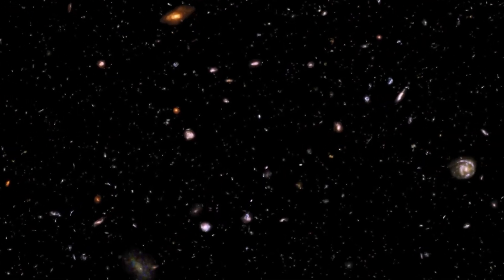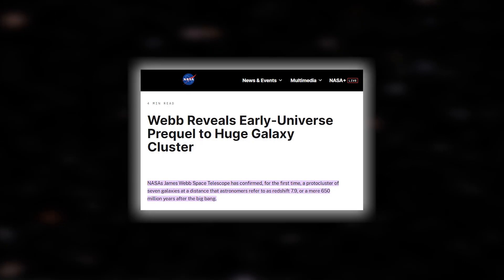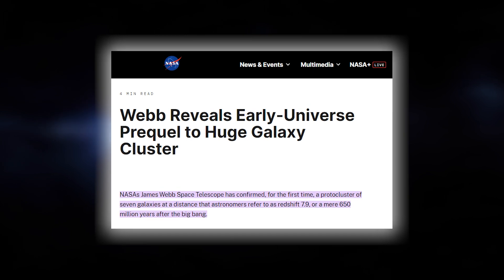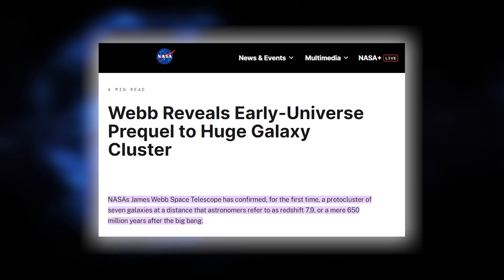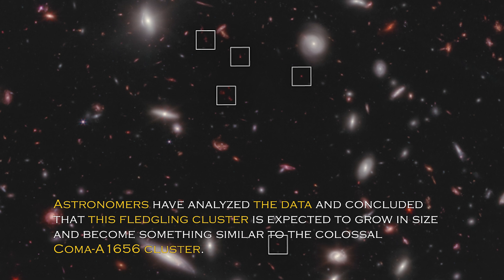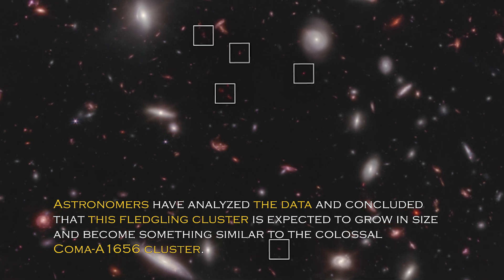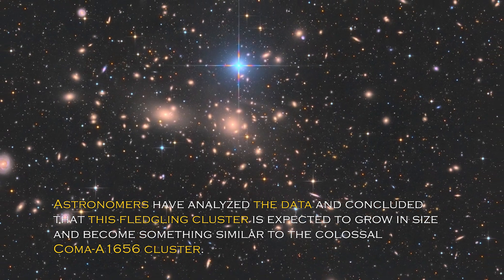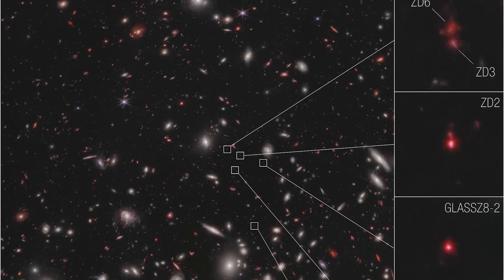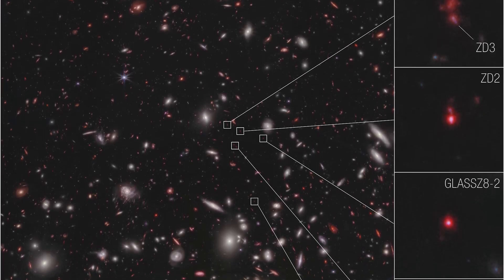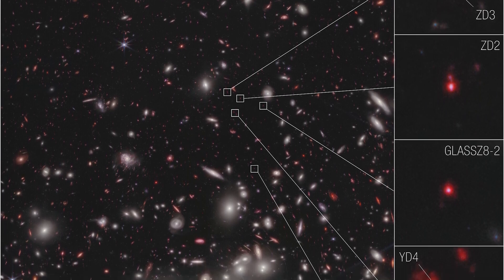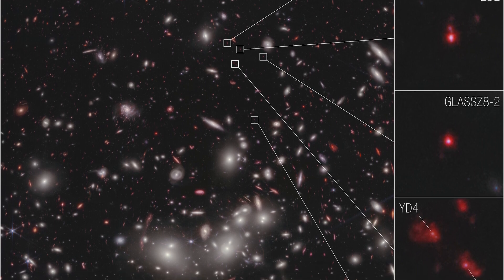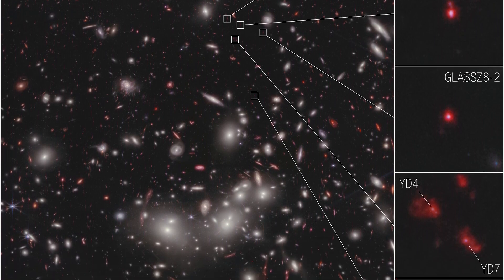Despite this, NASA recently tweeted about a galaxy cluster that lies just 650 million years after the Big Bang, adding another intriguing piece to the puzzle. Astronomers have analyzed the data and concluded that this fledgling cluster is expected to grow in size and become something similar to the colossal Coma A1656 cluster. The place where all this is taking place is unique and special, as it is in an area of accelerating galactic evolution thanks to the James Webb Space Telescope. Now researchers can measure the velocities of these seven galaxies, which gives them the confidence to confirm that they are bounded together in a protocluster.